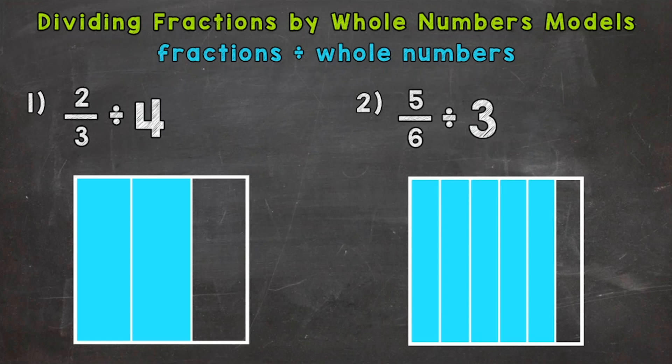So I started us off with a model of two-thirds here. Now notice the two-thirds is vertical, which means it's going up and down. When we divide it into four equal groups, we're going to go opposite, so horizontal, side to side. So let's split into four groups. One, two, three, four. So that's a model of two-thirds divided by four.